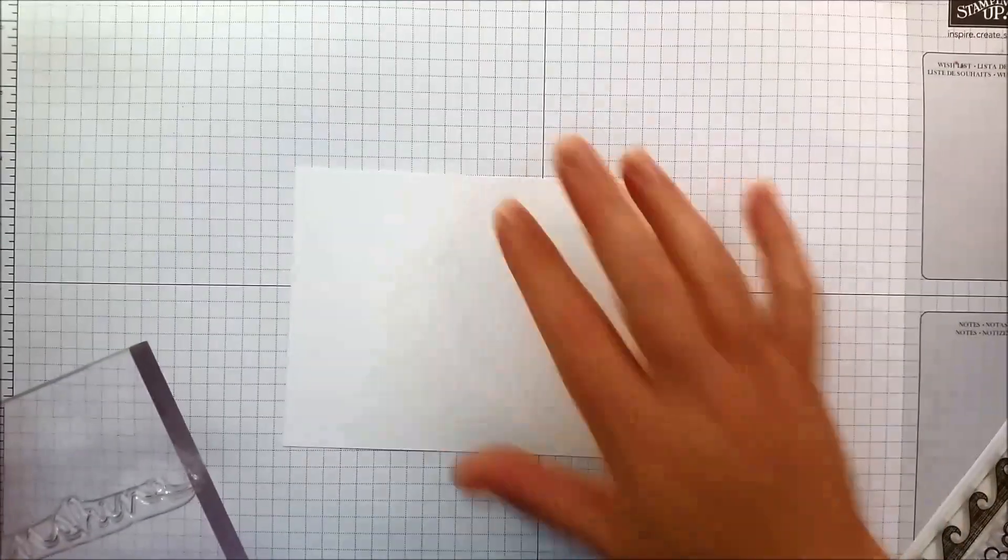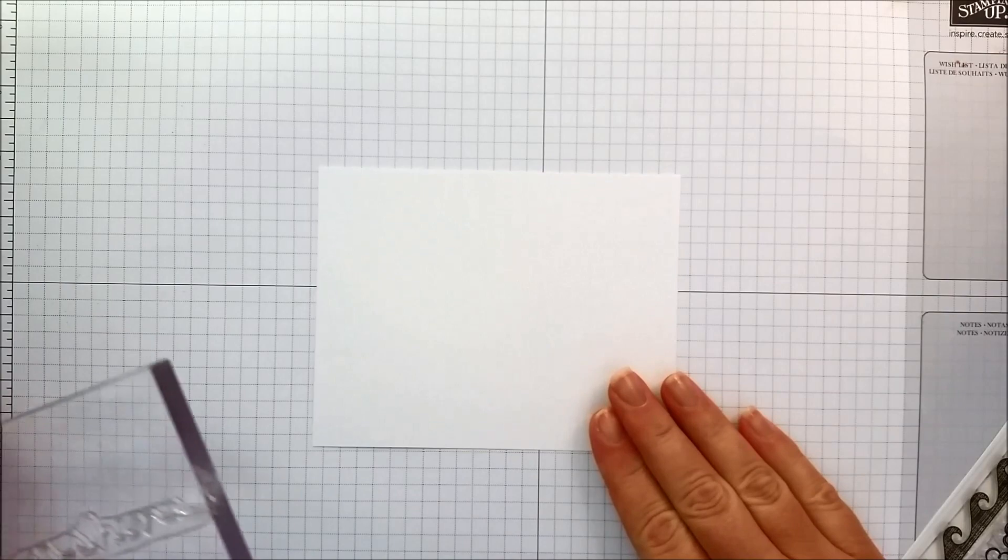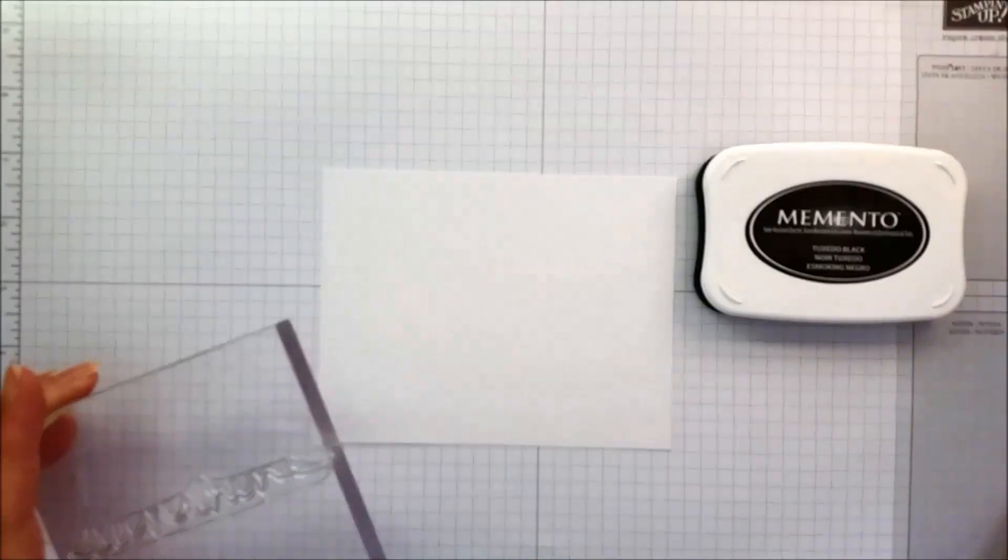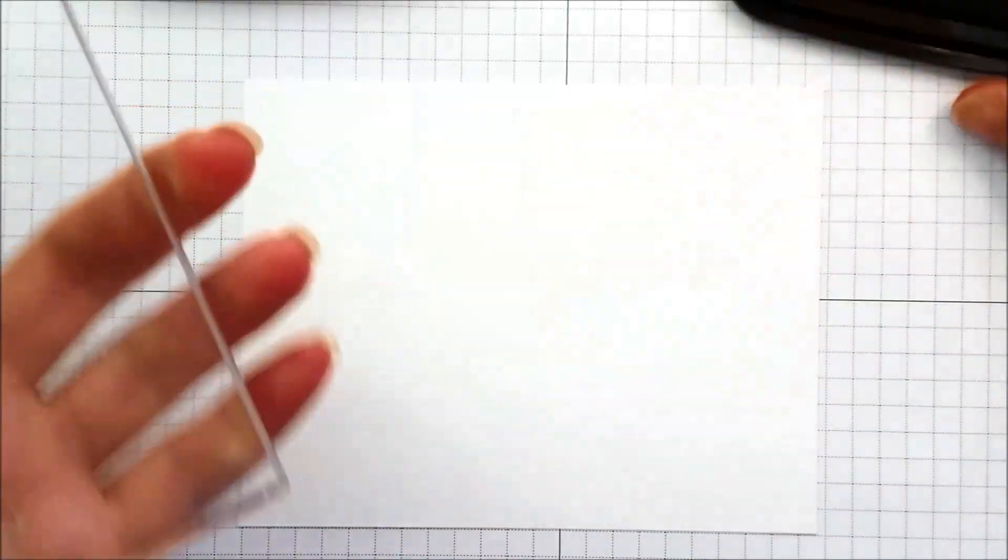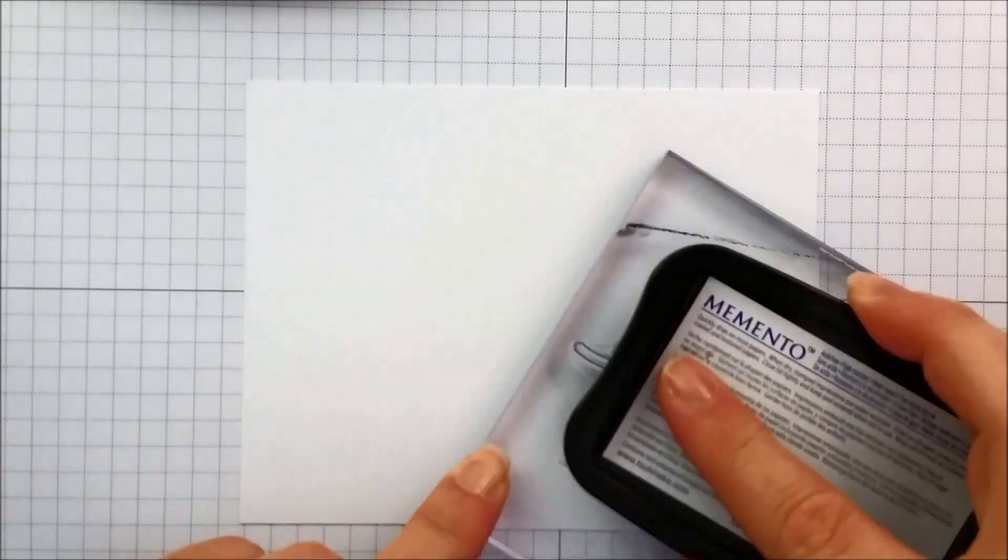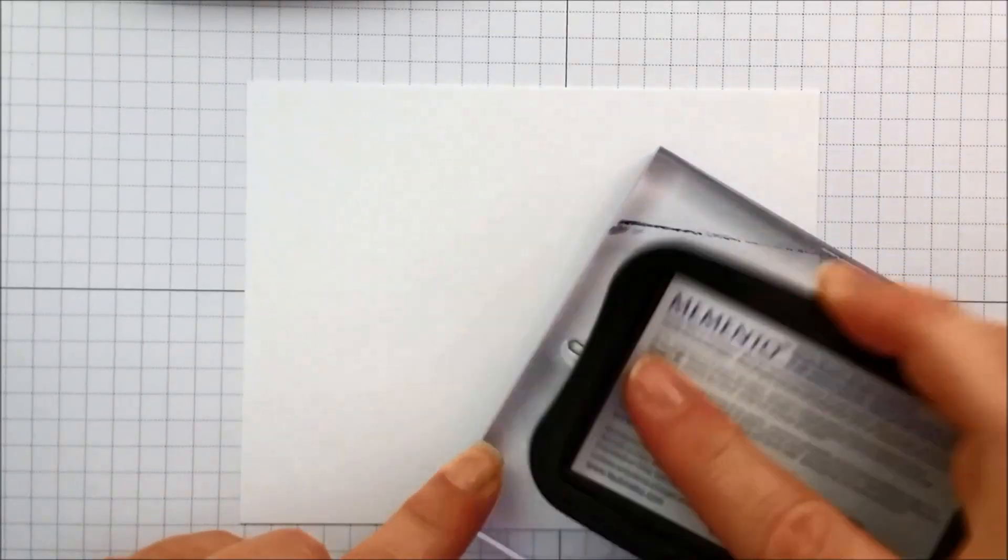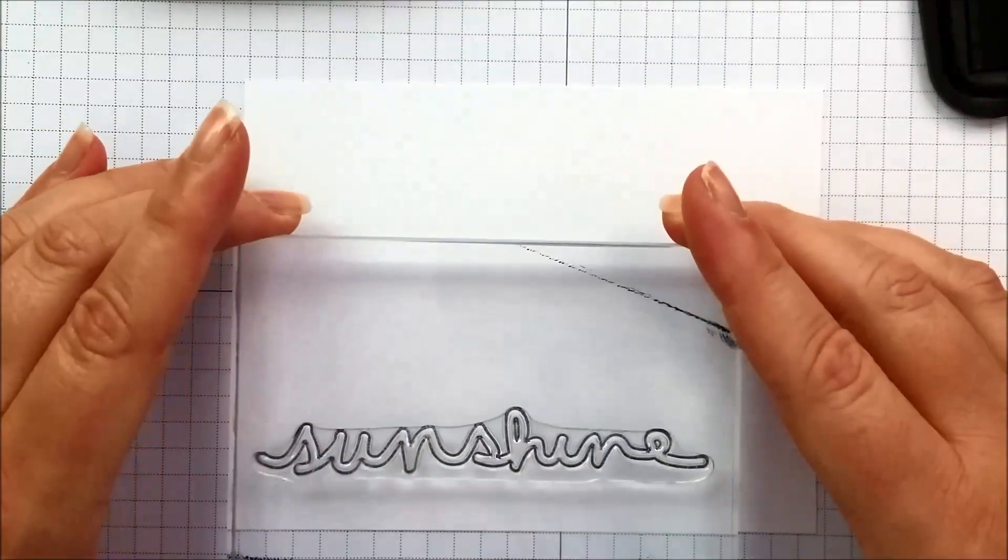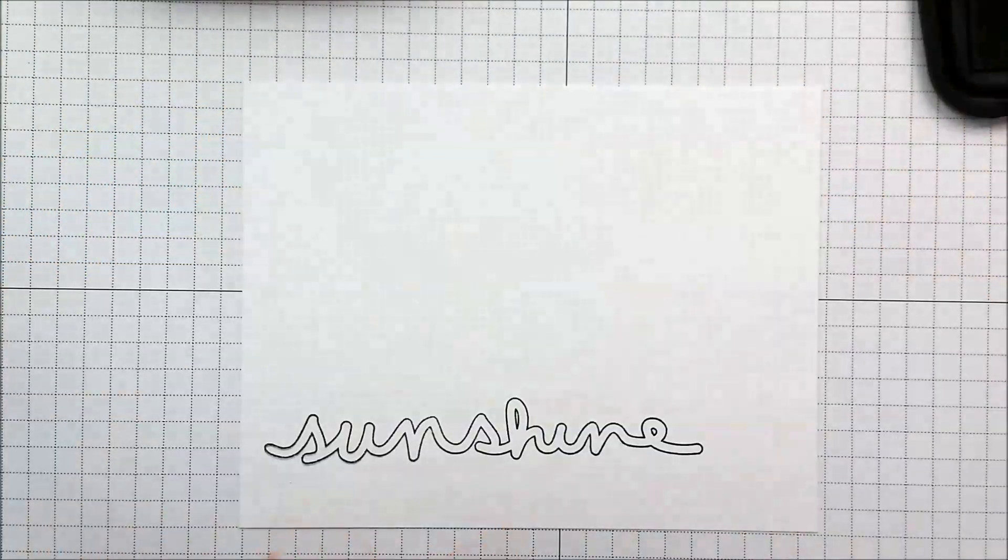So I'm going to use my acrylic block for this one. For this card I think we'll rotate this way and this time we're going to bring in some Memento Tuxedo Black ink. We've got our stamp all positioned and we're going to ink up the word sunshine with our black ink.